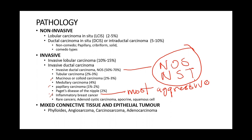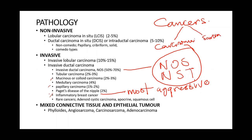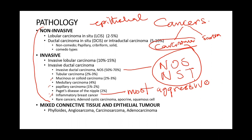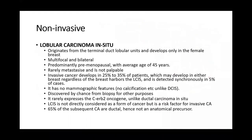You should know the difference between carcinomas and sarcomas. Cancers is a broad term for both. Carcinomas arise from epithelial tissue, while sarcomas arise from mesenchymal tissue. Sarcomas do not spread through lymphatics — they commonly have hematogenous spread.